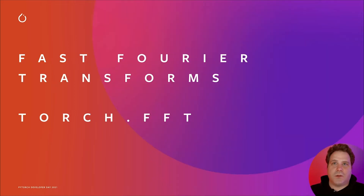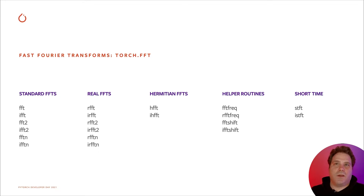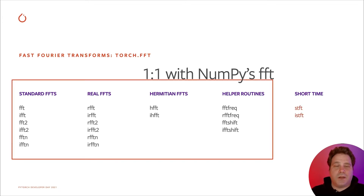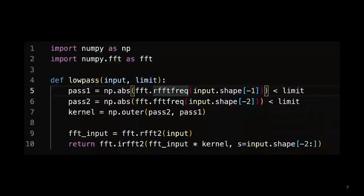The Torch.FFT module, modeled after NumPy's FFT module, makes it easier than ever to work with hardware-accelerated fast Fourier transforms. These transforms are frequently used for signal processing and can also be used to implement a variety of neural network layers. Here's a list of operations in the Torch.FFT module. Community members familiar with NumPy will notice that this module is a superset of the functionality in NumPy's NP.FFT module. In addition to the operations from NumPy's FFT module, PyTorch also offers the short-time Fourier transform and its inverse. In fact, PyTorch's FFT module is a drop-in replacement for NumPy's FFT module, as this animation suggests.